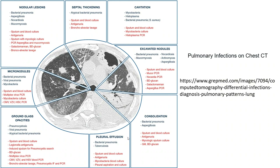Sometimes we can find a subtype with sickling. This is usually seen in typical bacterial pneumonia. And sometimes they show consolidation with cavitation, which is usually seen in mycobacteria, gram-positive bacterial pneumonia.